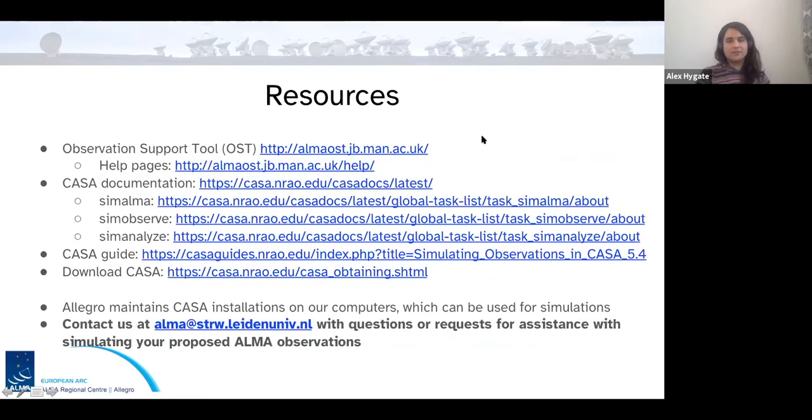And then finally, here's a list of different resources if you want to look more into these simulations. So there's the observing support tool and the help pages and the various CASA documentations that I've linked throughout this presentation, as well as a useful CASA guide that will guide you through simulating an example observation in CASA. And I'd finally conclude by saying that Allegro maintains a number of CASA installations on our computers, which can be used for simulations. And we're, of course, always available for help or questions you may have about simulating your proposed observations. And you can contact us at elma at strw.leidenuniv.nl with these questions. Thank you very much. And I'll take care of any questions.